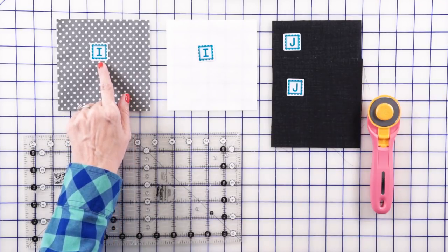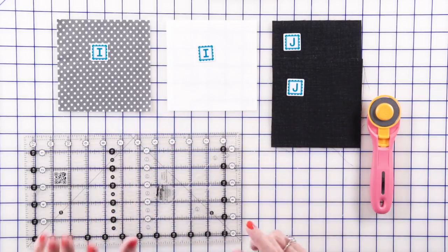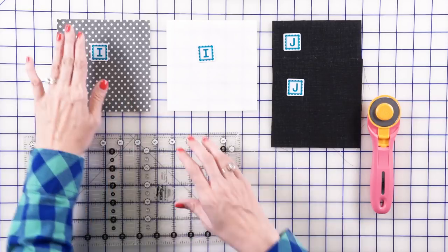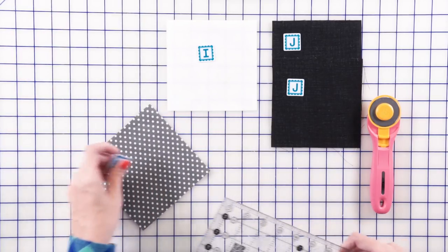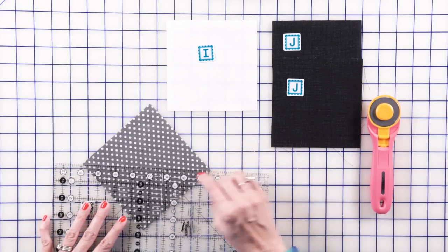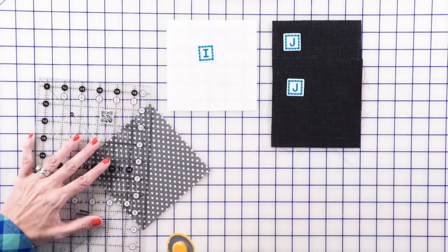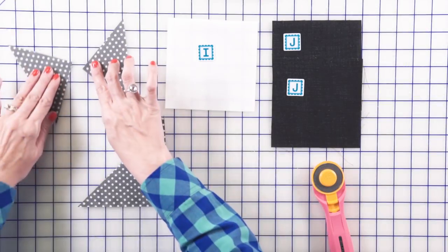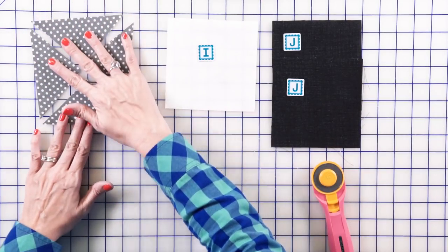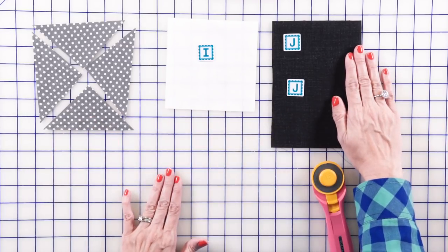So our barn block one has hourglass units in it. So you're going to have a fabric I that's gray and a fabric I that's white. And then you're going to have two fabric J's that are black. What we're going to do is we're going to cut these on the diagonal twice. I'm going to show you how you do that. You want to be really careful when you're cutting. Make sure your ruler is on each point. Cut once. So when you cut that apart, you've got four triangles. So from both of your I's, you're going to cut four triangles. And from your fabric J, you're going to cut eight triangles.